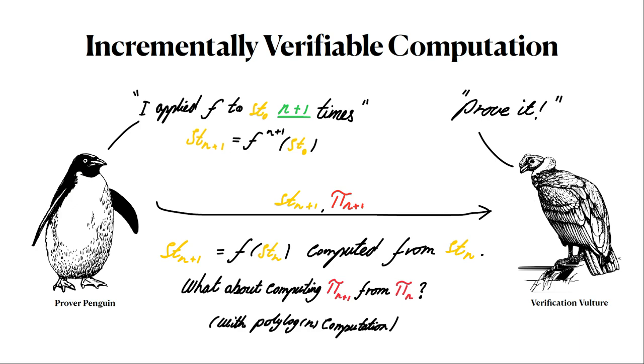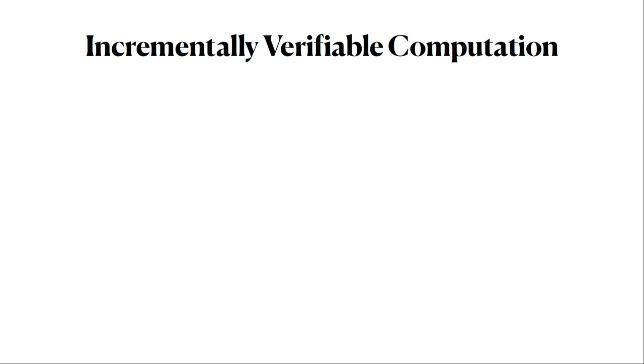Obviously the new state can easily be obtained from the old state by applying the function once more. But what about computing the new proof from the old proof? If I have to recompute my proof and it takes order of n to compute the proof, that's going to be terrible. So we want to compute the new proof in something that is essentially independent of n. Just slightly more formally, there's some initial state and some initial proof. You can apply a function, you get a new state, and there's a proving algorithm that takes the previous proof and the previous state and produces a new proof.